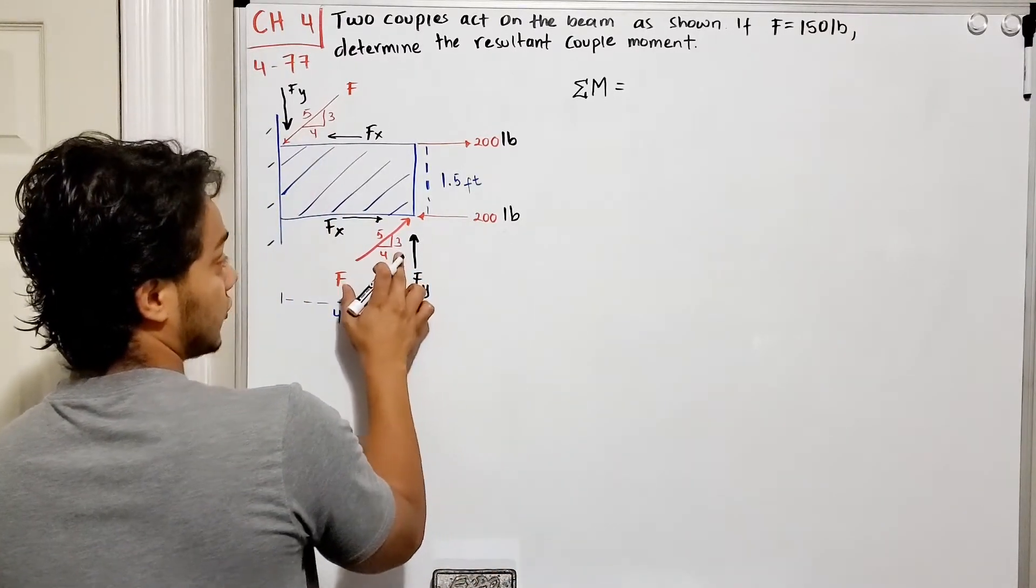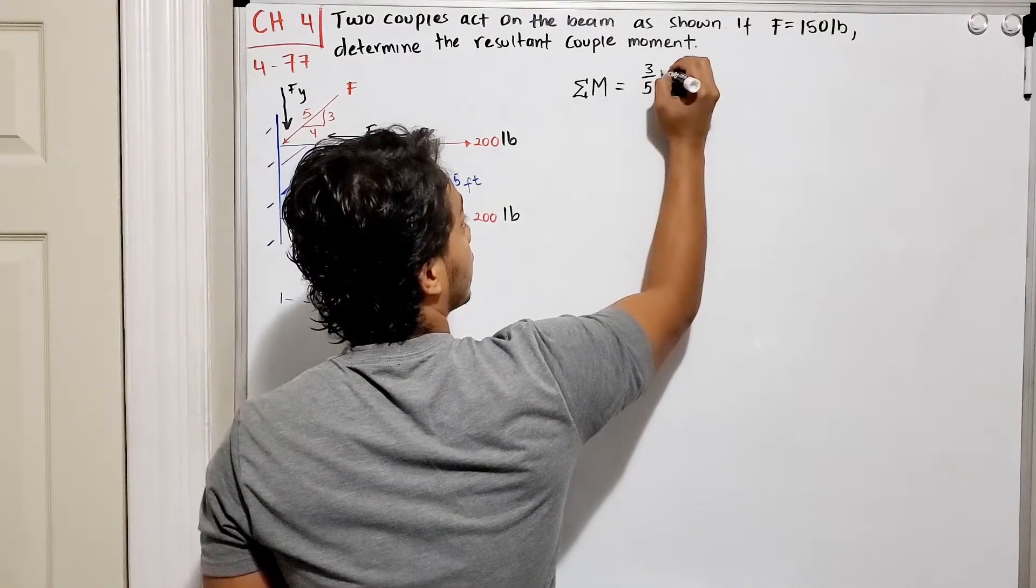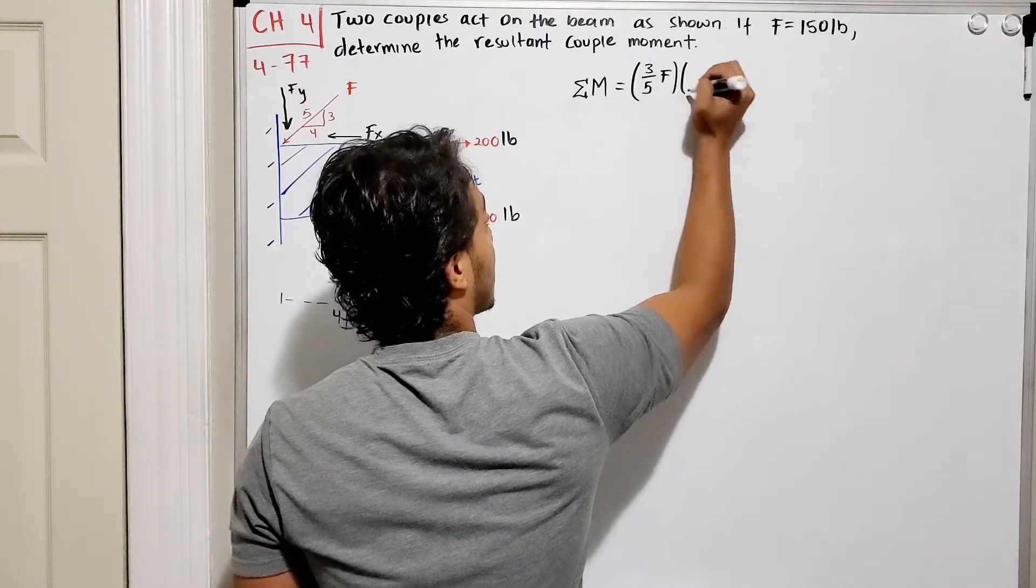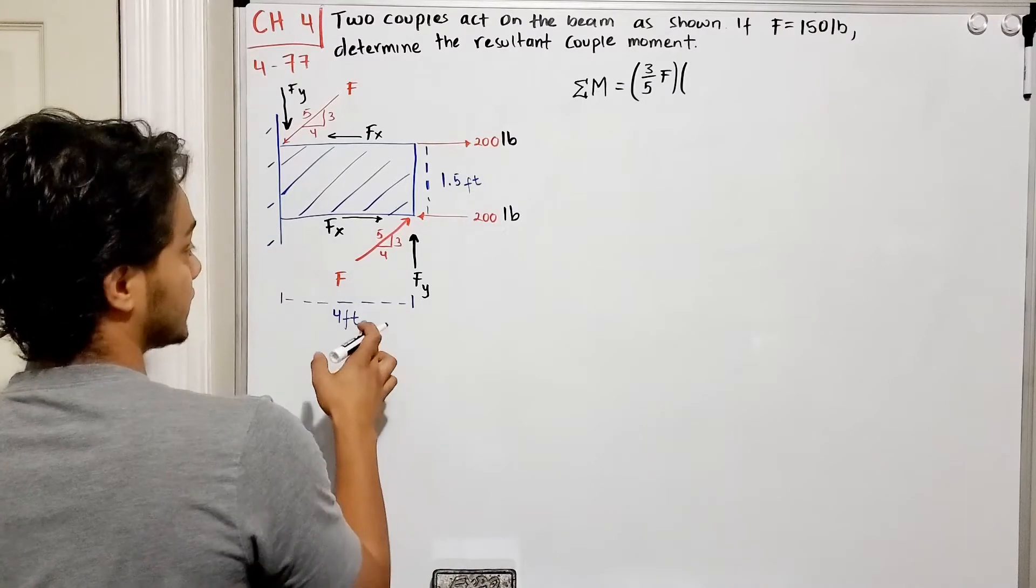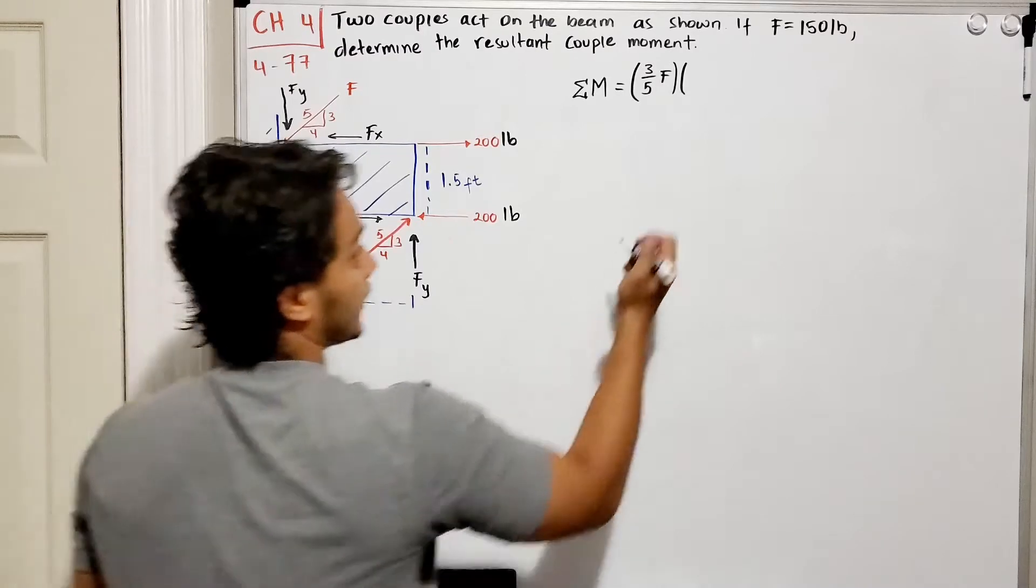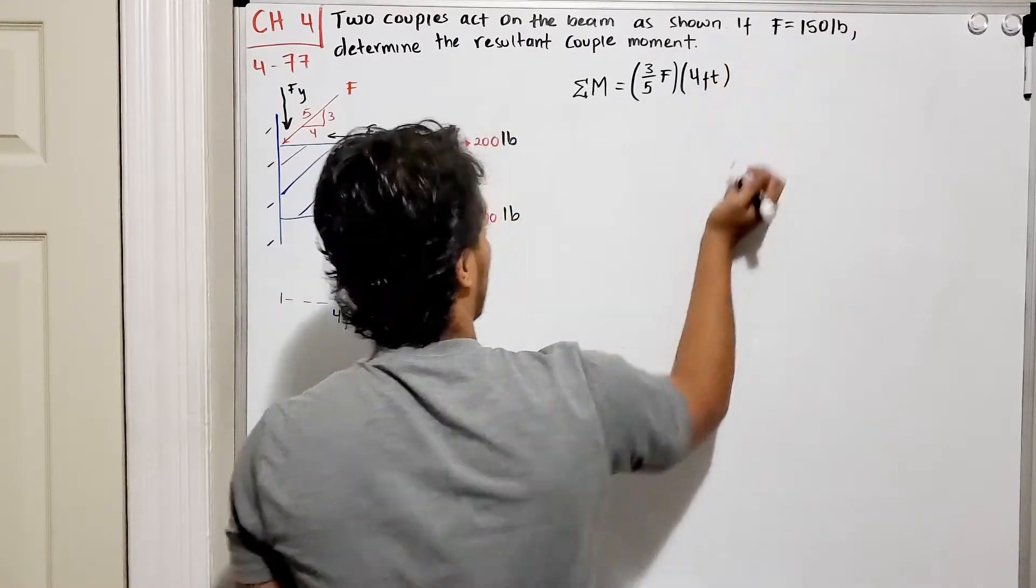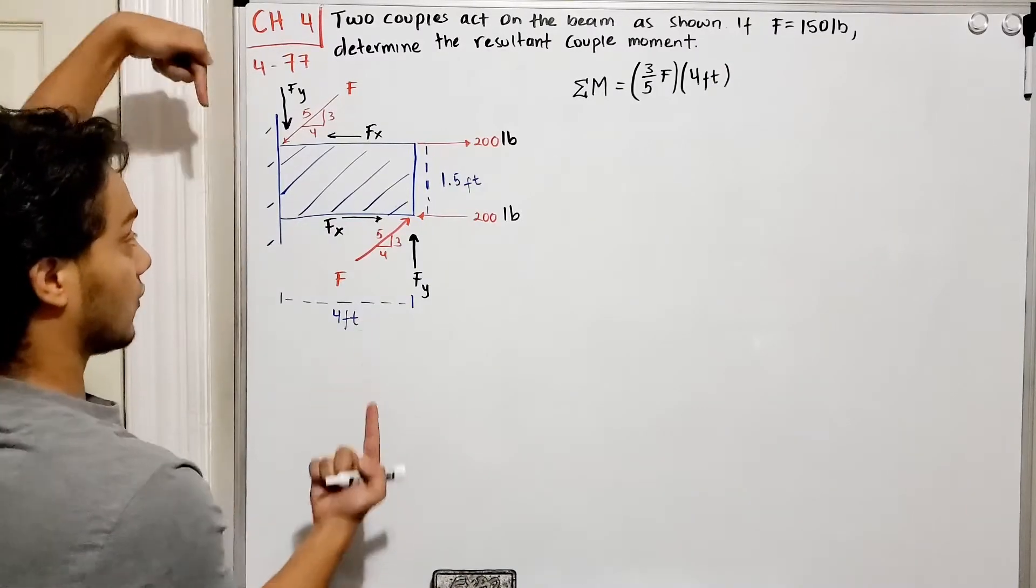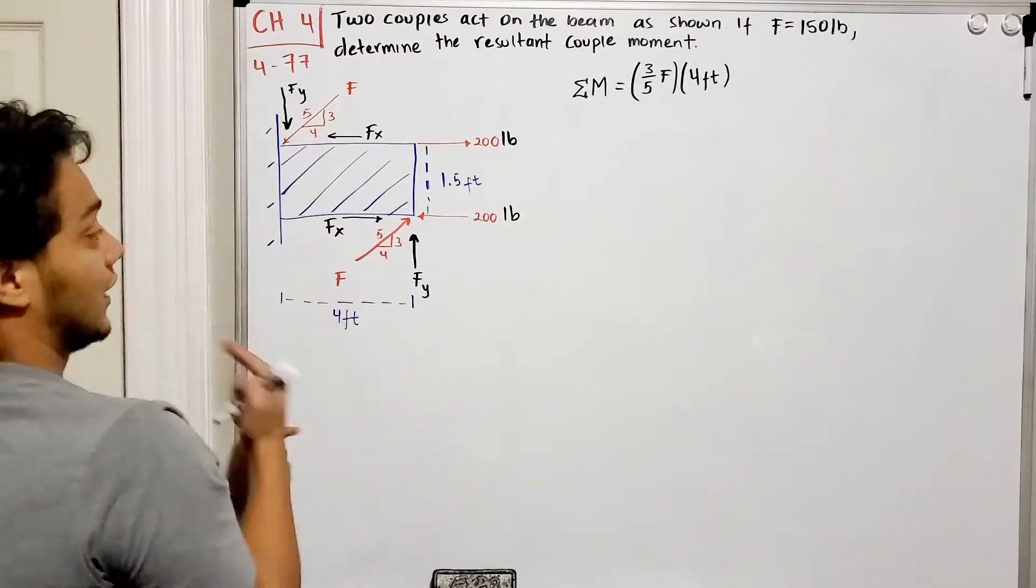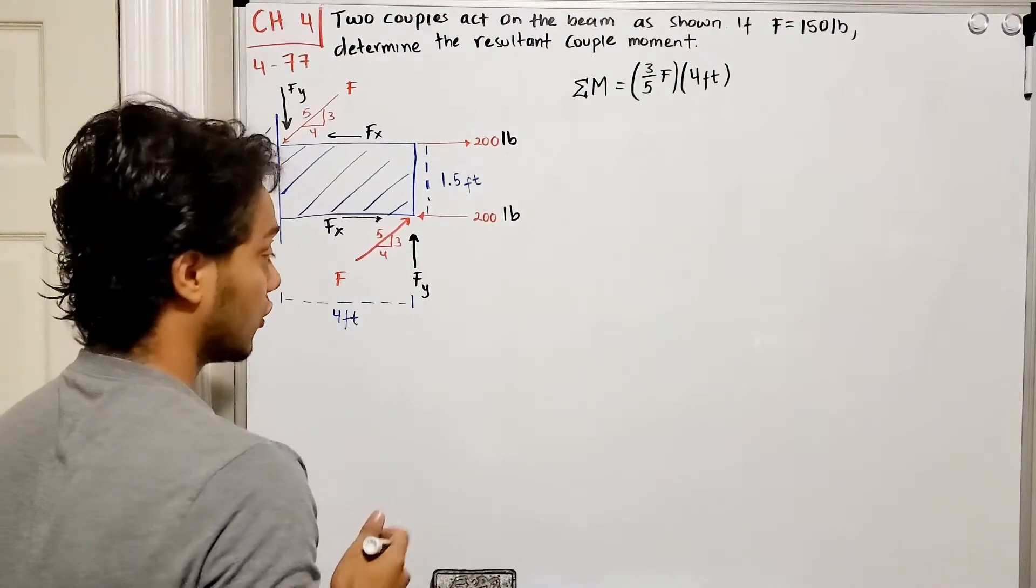For our F_y we know by similar triangles that I have 3 out of 5 of my force F multiplied by the distance. What is the distance between these two F_y? Which is 4 feet. So we're gonna multiply this by 4 feet. Now what's the direction of these two forces? They're in the counterclockwise direction so I'm gonna leave them positive. Counterclockwise is positive.